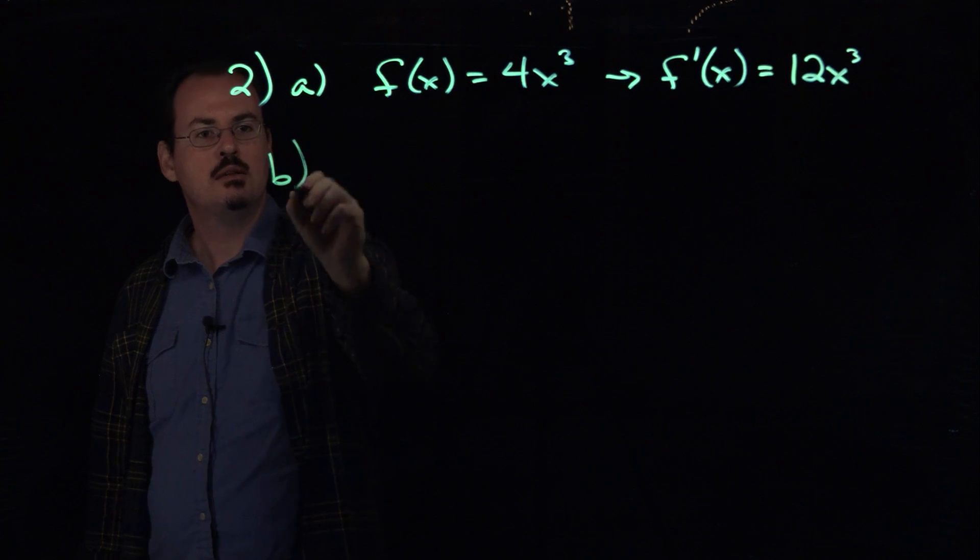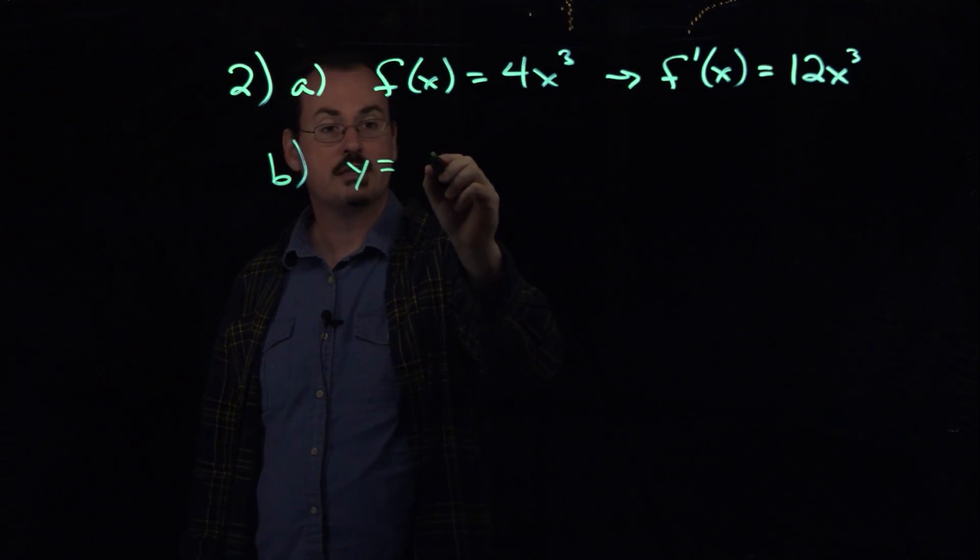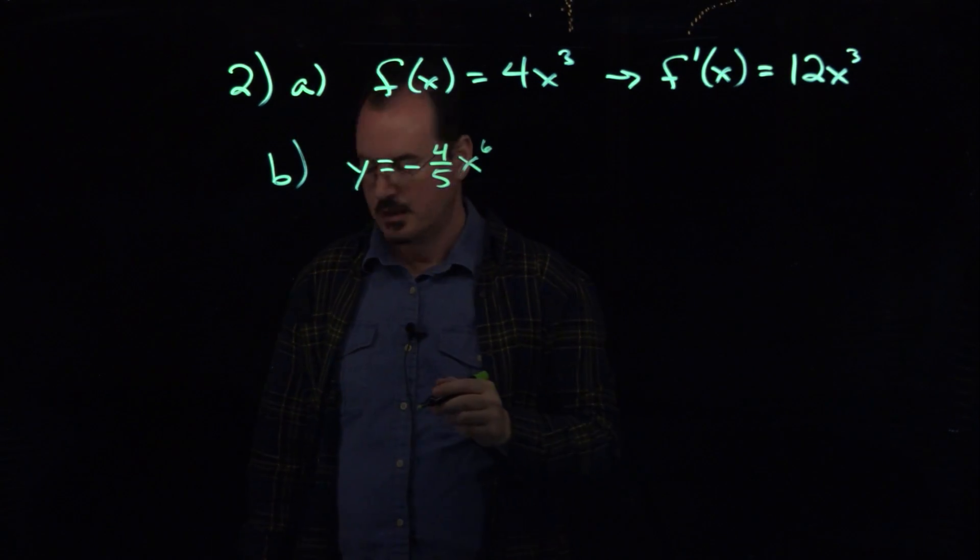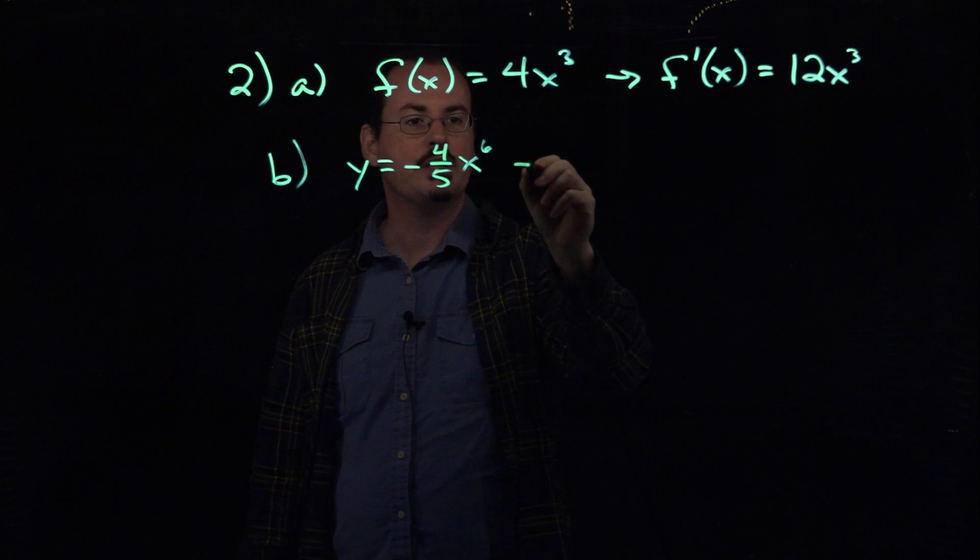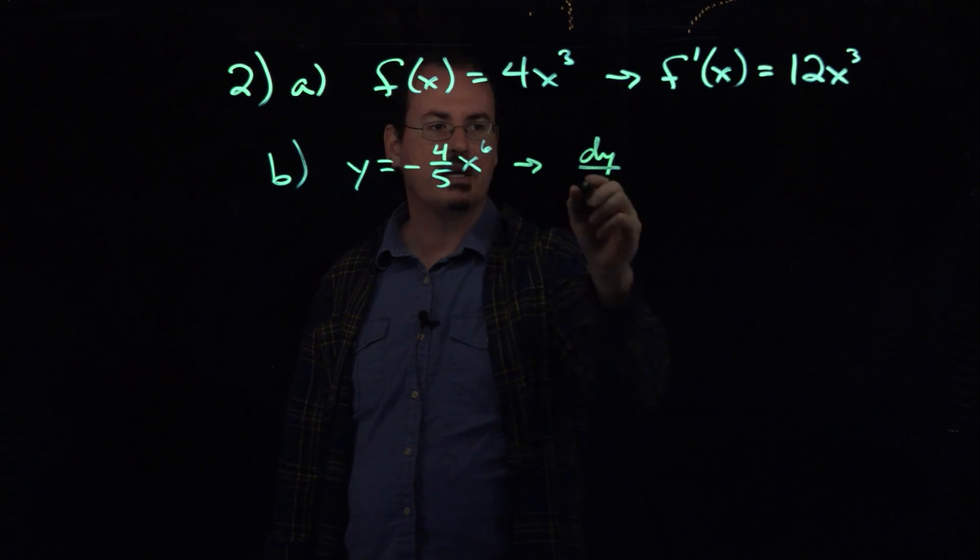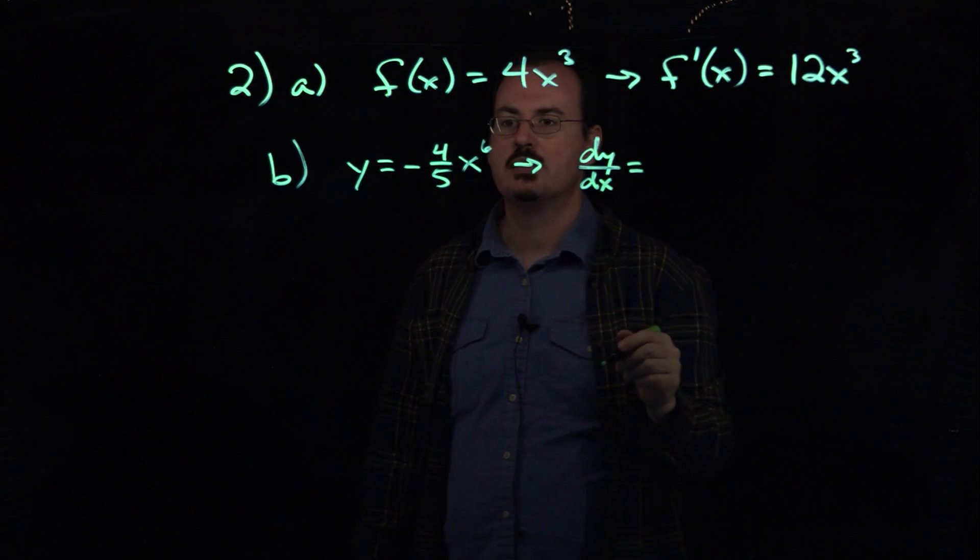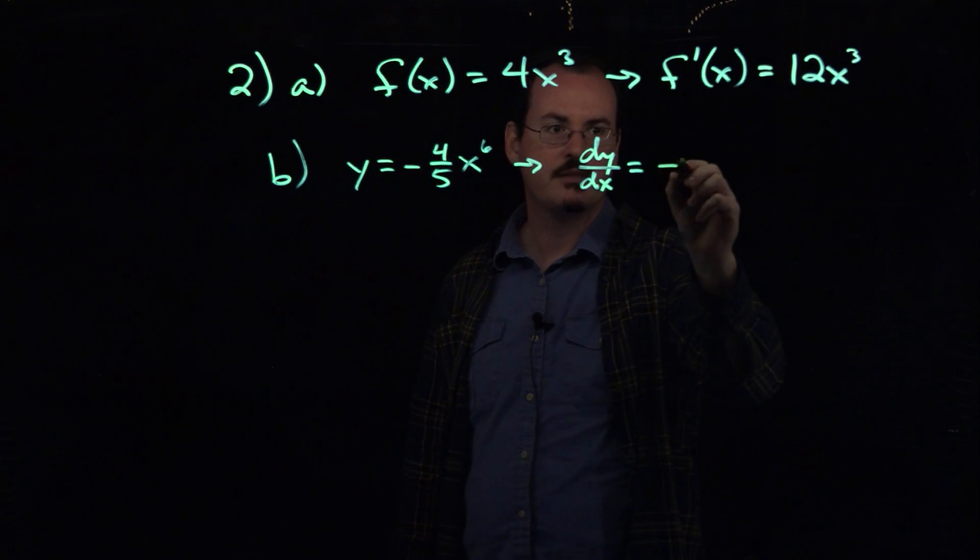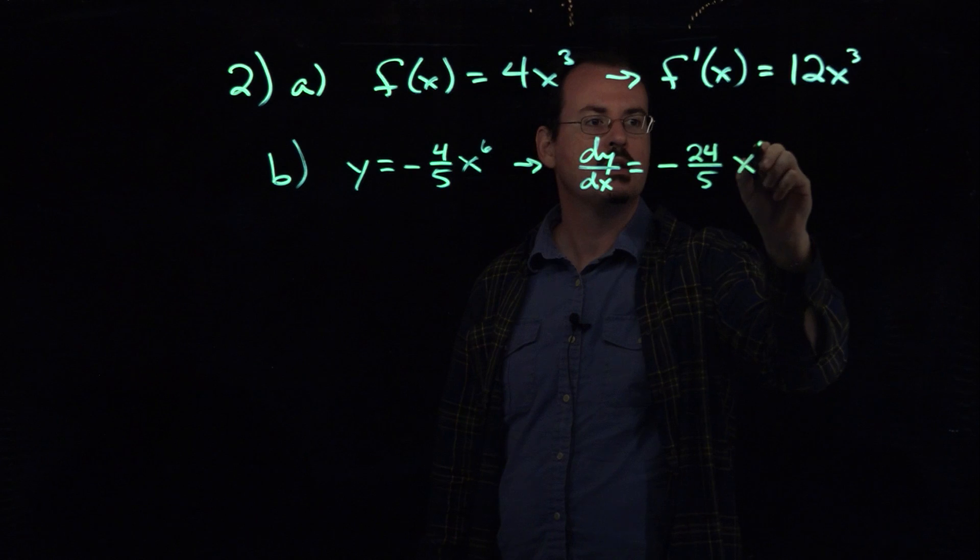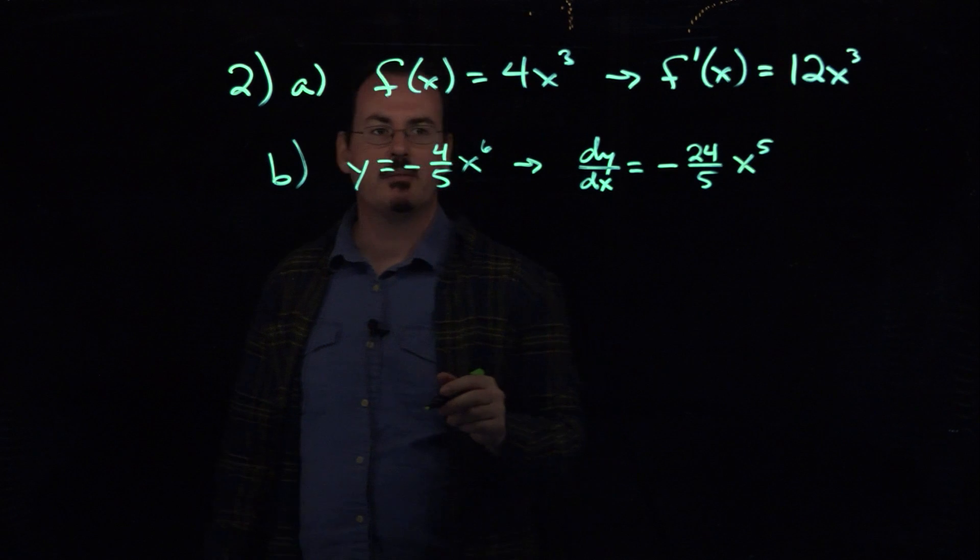Similar for part b, we've got a function y equals negative 4 fifths x to the sixth. Again, use the power rule here with the constant multiple that we have there. This is Leibniz notation. Since the function was defined as y, we say the derivative is dy/dx. If I put the 6 in front there, I'm going to get negative 24 over 5x to the fifth power. So lower the power by 1, put the exponent in the front and multiply it by the number that's already there.